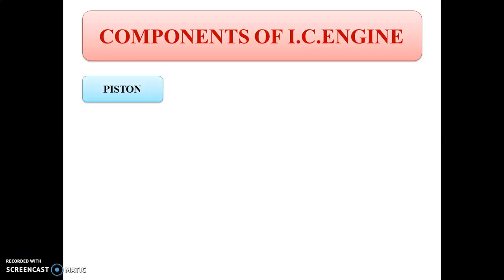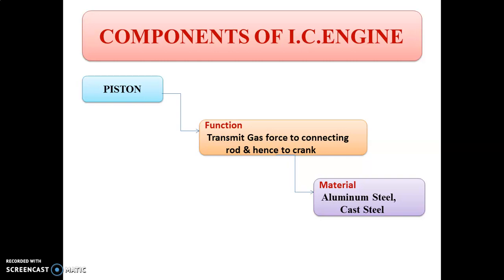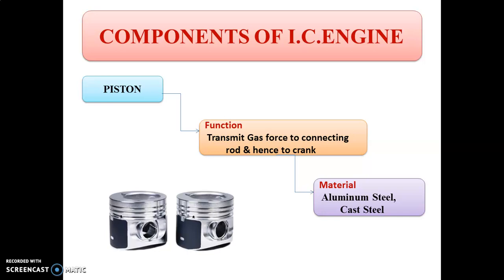The next component is the piston. The piston of internal combustion engine is a device which transmits the energy or force of the expanding gases to the connecting rod. This piston always reciprocates or slides up and down inside the cylinder. The material for the piston is aluminium, cast steel, and cast iron. The figure shows the pistons for internal combustion engine.